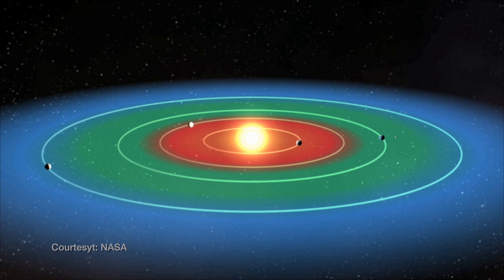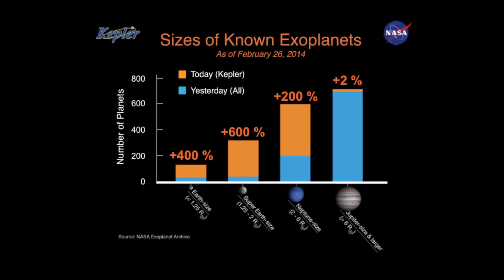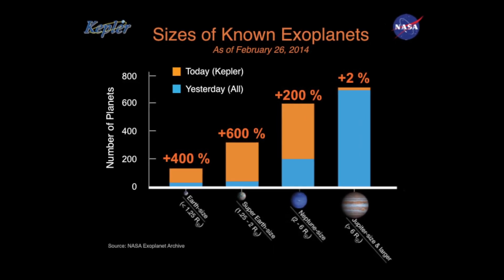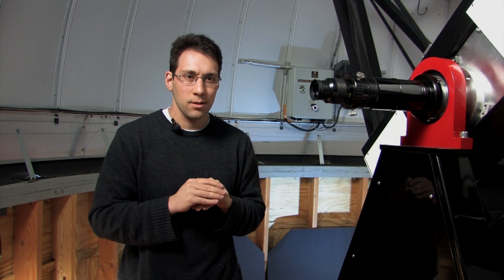One of them is in the habitable zone. This region is just the right separation from the star where it is not too hot and not too cold. If there is water, it would be in a liquid phase. The planet is 1.1 times the radius of the Earth, just a little bit larger than Earth itself, and it's right in the habitable zone.